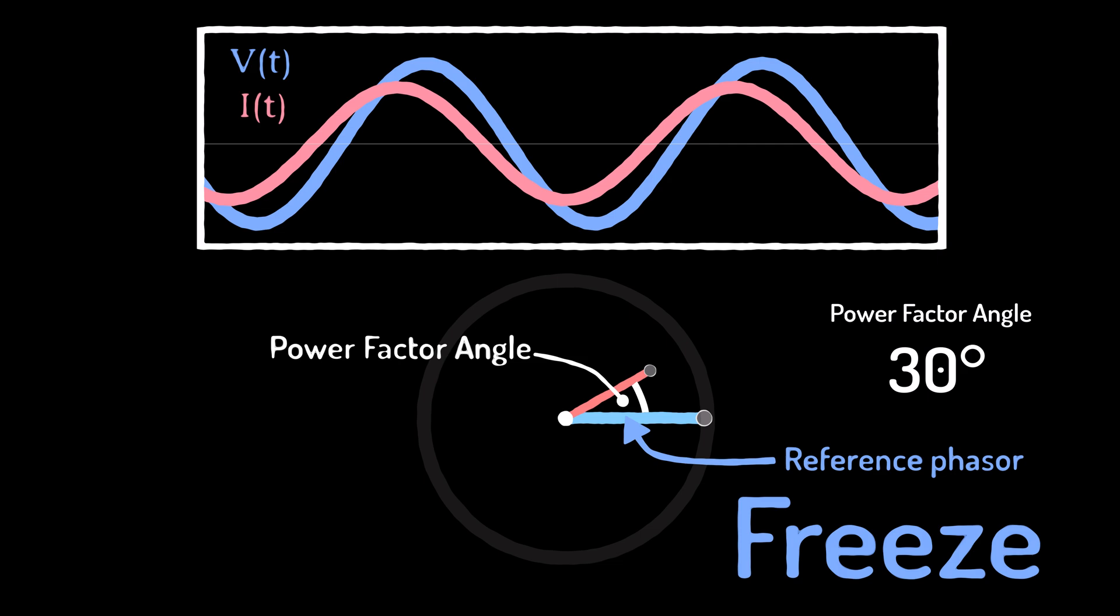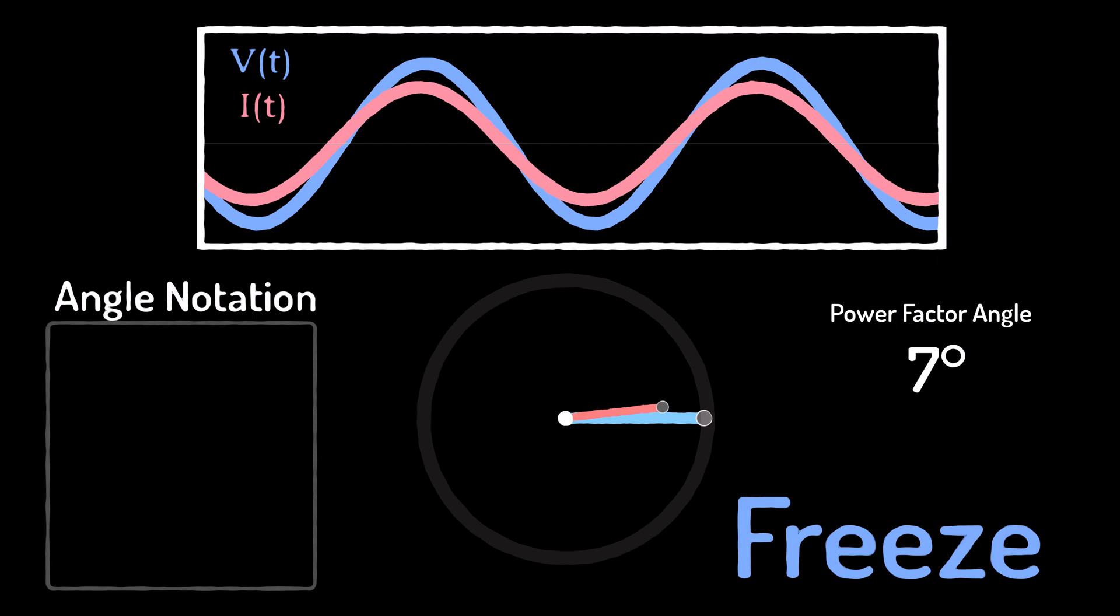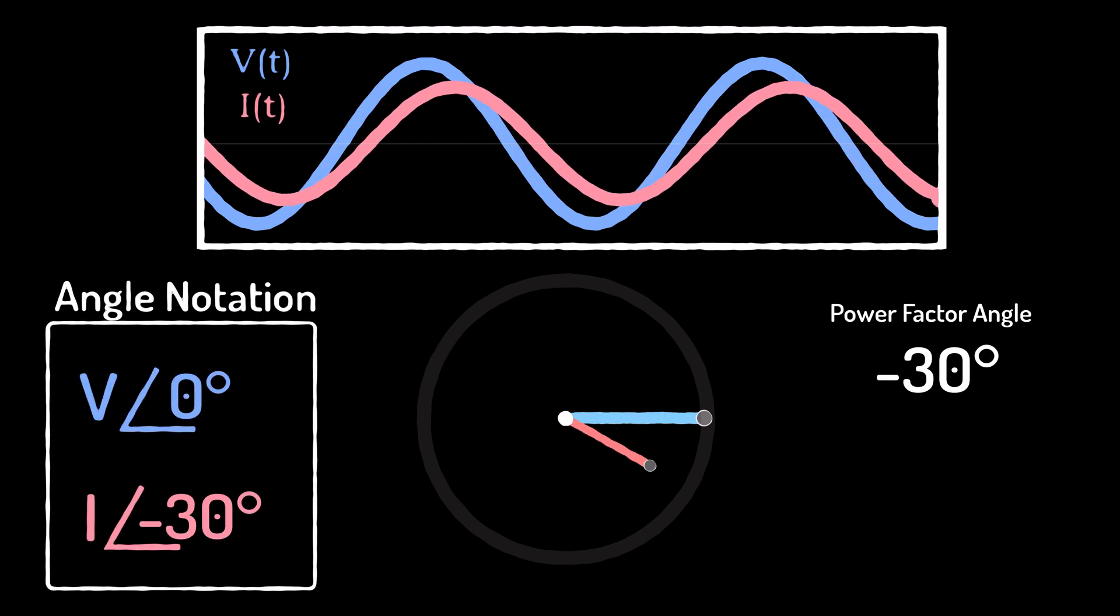This is the difference in phase between the voltage and current. This is called angle notation, and it's the standard way of representing voltages and currents in steady state power system analysis.